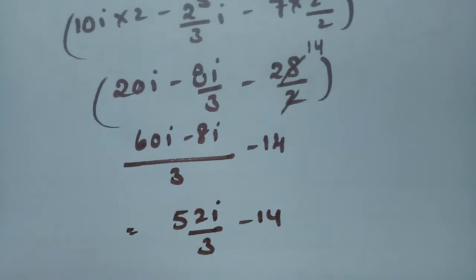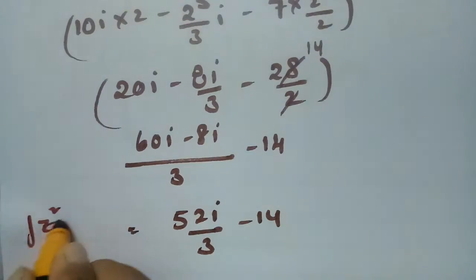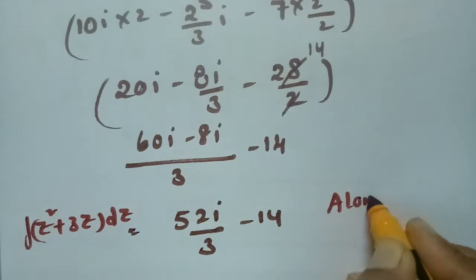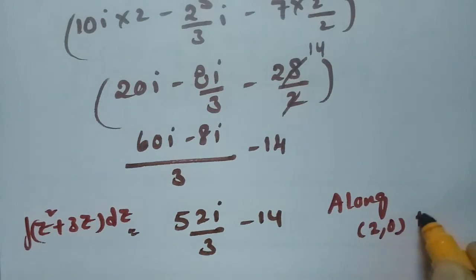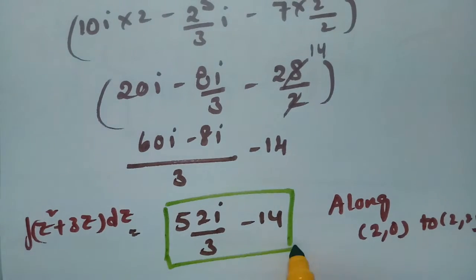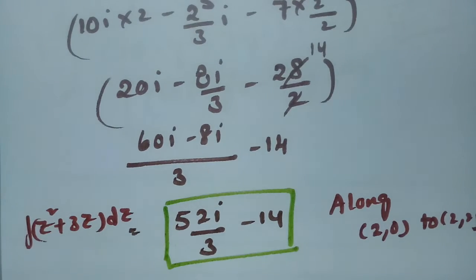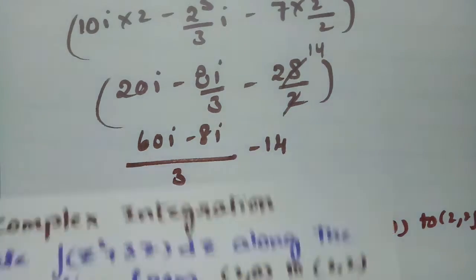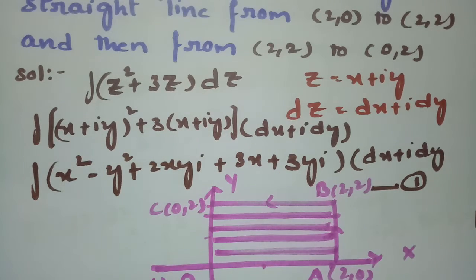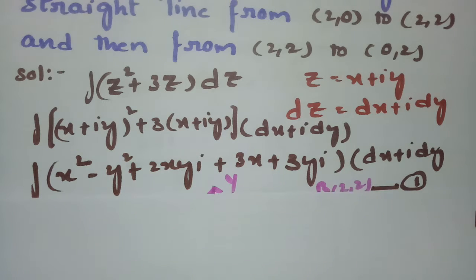So the value of the integral of z squared plus 3z dz along the points (2,0) to (2,2) — that is along AB — is 52i by 3 minus 14. The next part is the same integral along (2,2) to (0,2), that is along line BC.